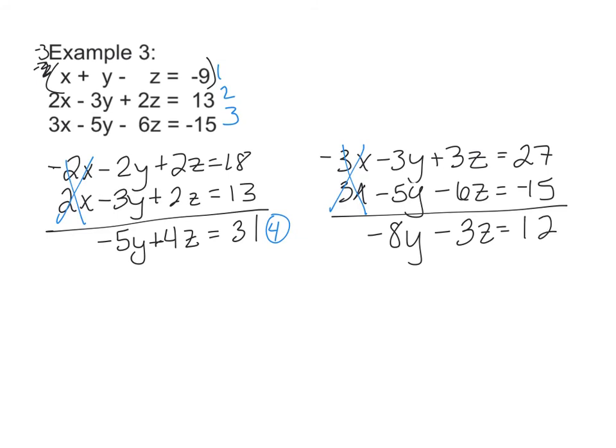Now when I label this equation 5, I want to use elimination to put together equations 4 and 5. When I look at that, the z looks easier because 3 and 4. So I'll multiply this equation by 3 and this equation by 4. So I get -15y + 12z = 93.